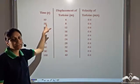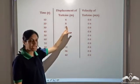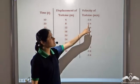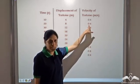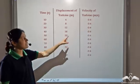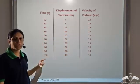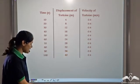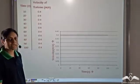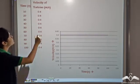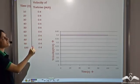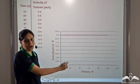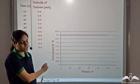After twenty seconds, displacement of the tortoise was eight metres. So eight by twenty gives us 0.4 metres per second. We calculate the velocity corresponding to each time period for the entire race and plot the velocity-time graph for the tortoise. This is the table giving the time and velocity of the tortoise, and this is the velocity-time graph we get for the tortoise.